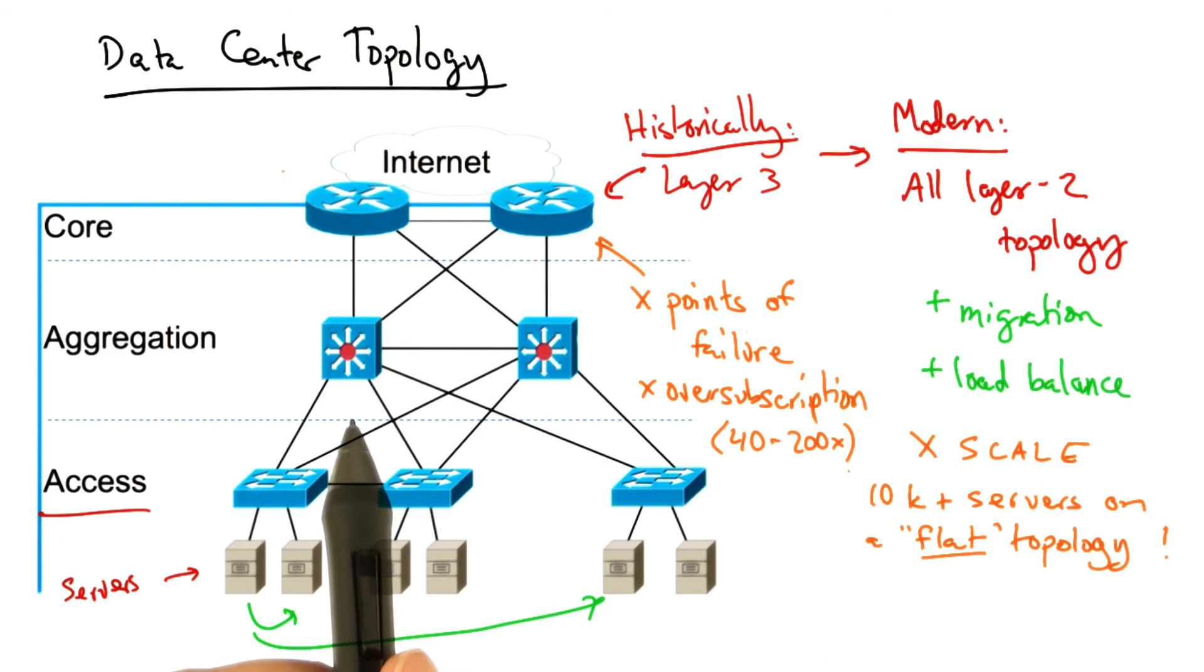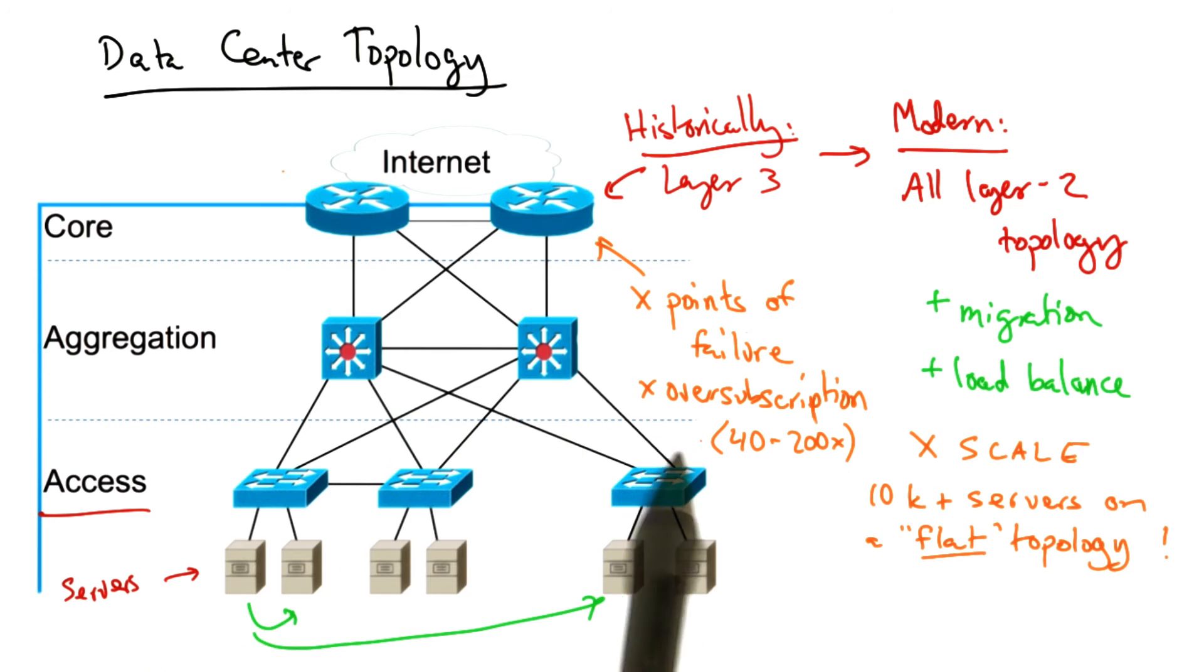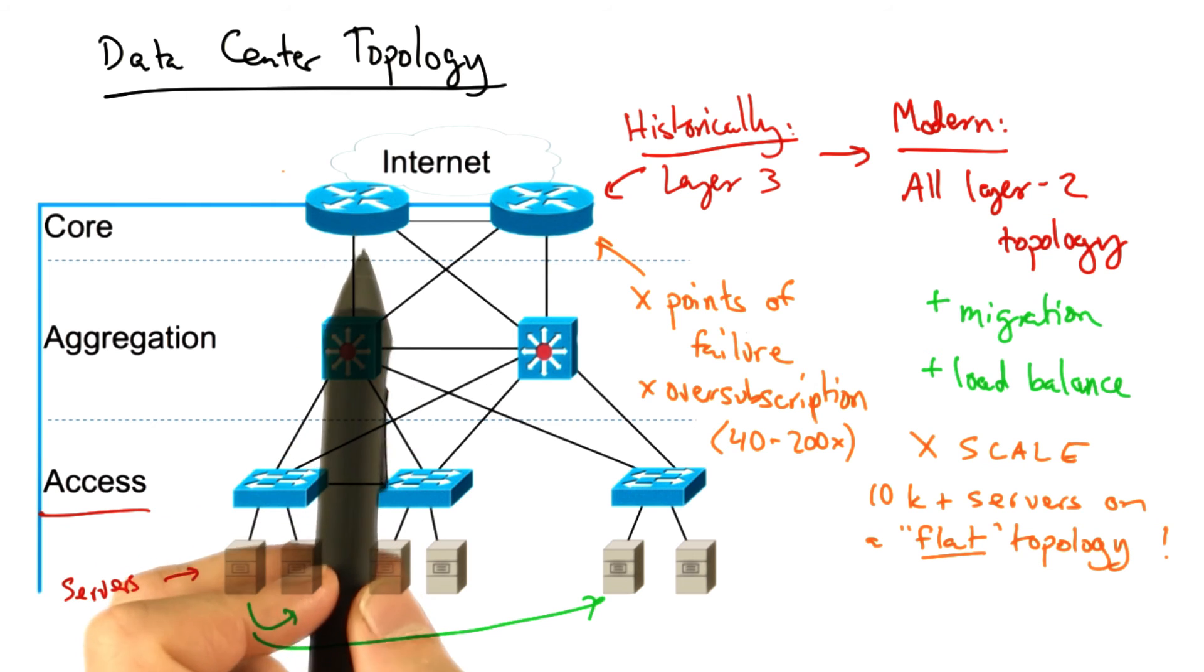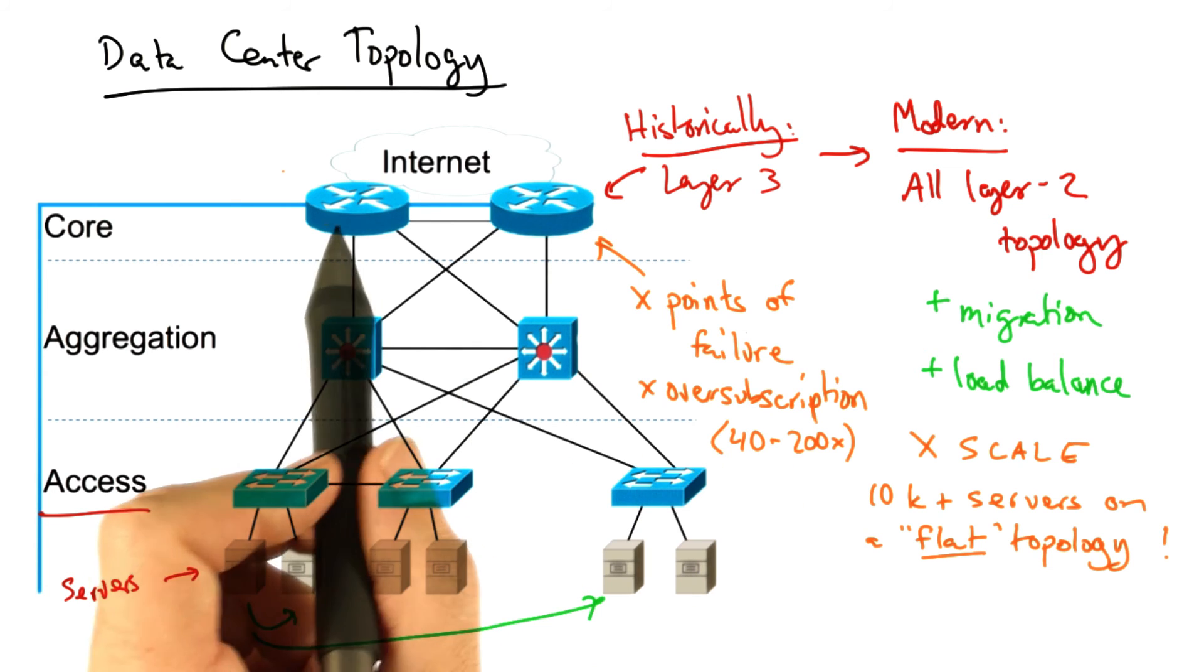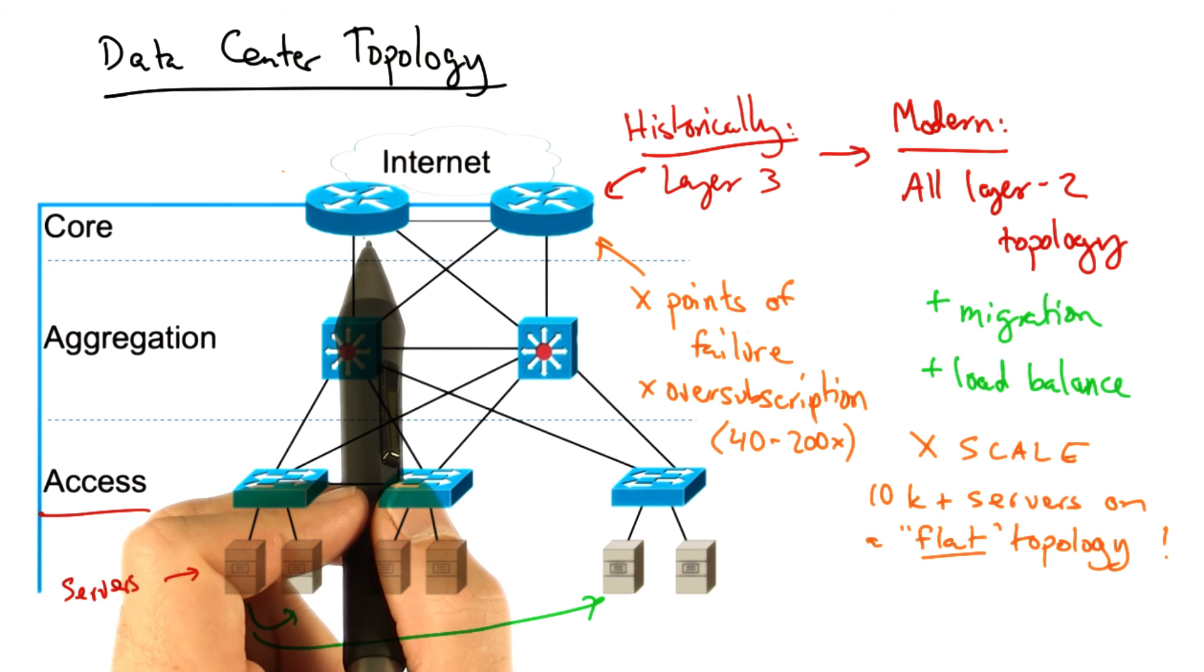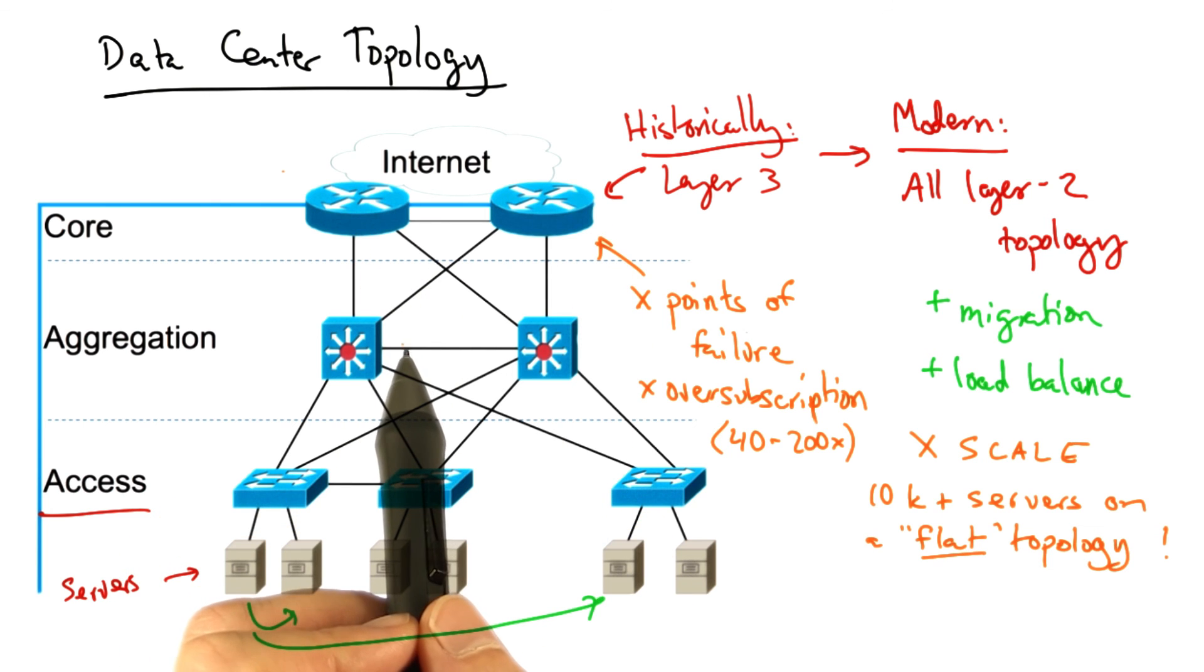Modern data center network operators have observed that as you move from the bottom of the hierarchy up towards the core, the links at the top can carry as much as 200 times as much traffic as the links at the bottom of the hierarchy. So there's a serious capacity mismatch in that the top part of the topology has to carry a whole lot more traffic than the bottom.